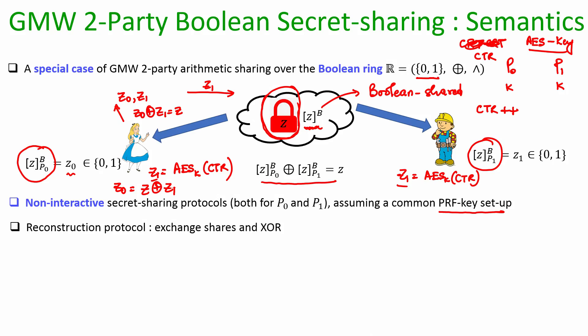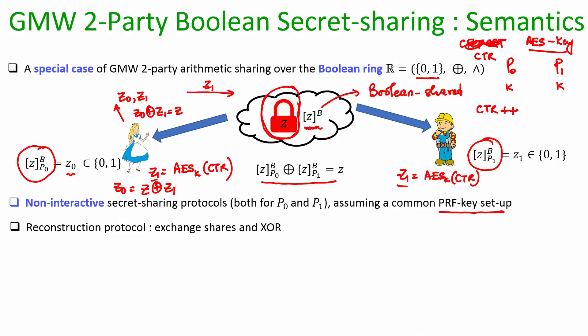What will be the reconstruction protocol in the GMW Boolean world? If there is a bit Z which is secret shared and Alice and Bob want to reconstruct bit Z, they just have to exchange their shares, then XOR both shares to get back the value Z. That is the simple reconstruction protocol.